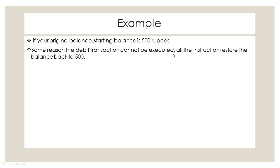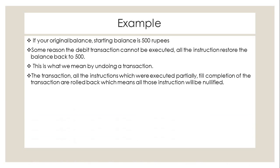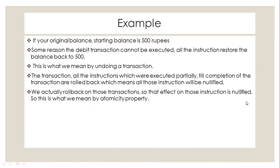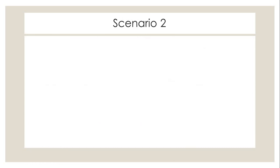This is what we mean by undoing a transaction. All the instructions which were partially executed up to the point of failure are rolled back — meaning all those instructions will be nullified, so that before a transaction completes, if any instructions are incomplete, we roll back all of them. This is called atomicity — it is the first property.